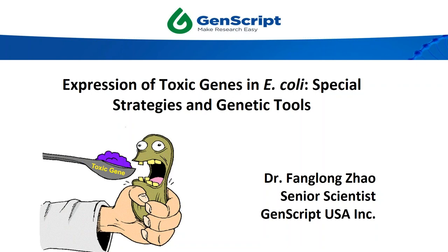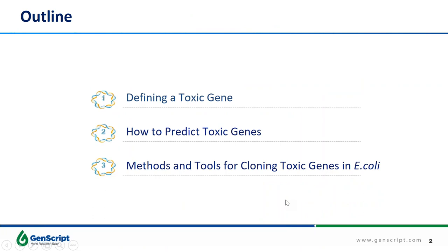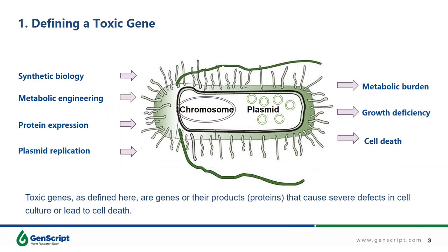Today, the topic of this webinar is how to express toxic genes in an E. coli expression system. The webinar is structured in three parts. In the first part, we will talk about what kinds of genes are toxic to the host. In the second part, we will describe how to predict if certain genes are toxic. And in the last part, we will describe some methods and tools for cloning toxic genes in E. coli. Now let's start from the first part: the definition of toxic gene.